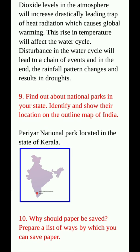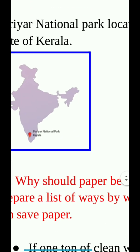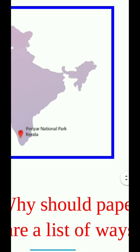Question number 9: Find out about the national parks in your state and identify and show their location on the outline map of India. Periyar National Park, located in the state of Kerala, is mentioned and also shown on the map.